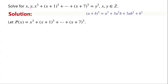We know that (a+b) cubed equals a cubed plus 3a²b plus 3ab² plus b cubed. Applying this, (x+1) cubed equals x cubed plus 3x squared plus 3x plus 1.